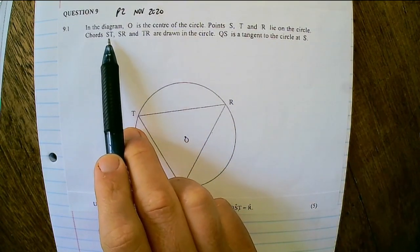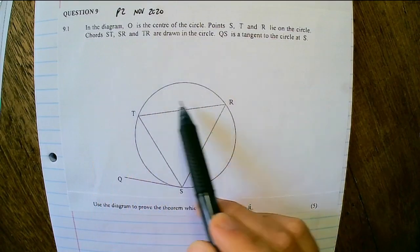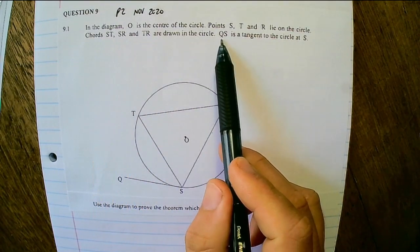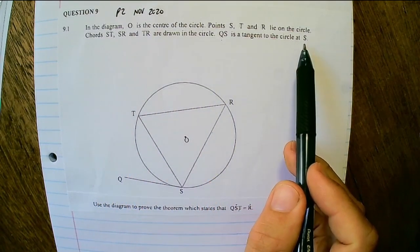Chords ST, SR and TR are drawn in the circle, and QS is a tangent to the circle at S.